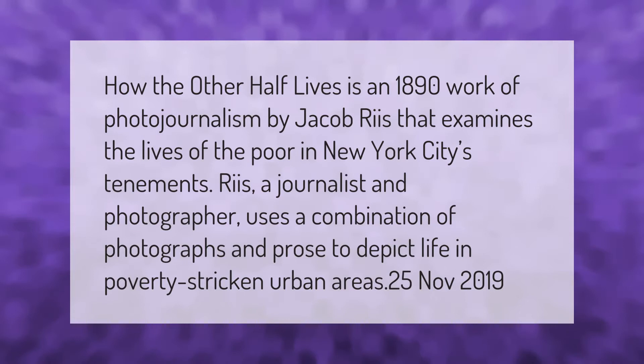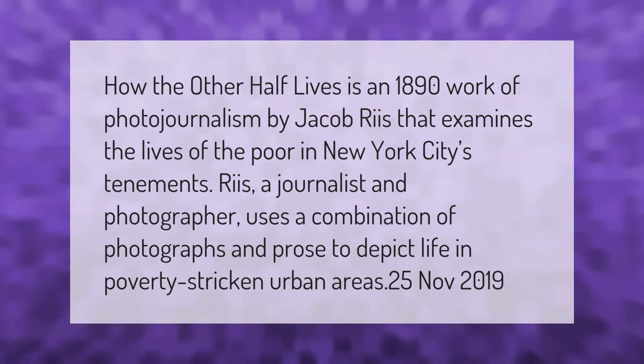How the Other Half Lives is an 1890 work of photojournalism by Jacob Riis that examines the lives of the poor in New York City's tenements. Riis, a journalist and photographer, uses a combination of photographs and prose to depict life in poverty-stricken urban areas.